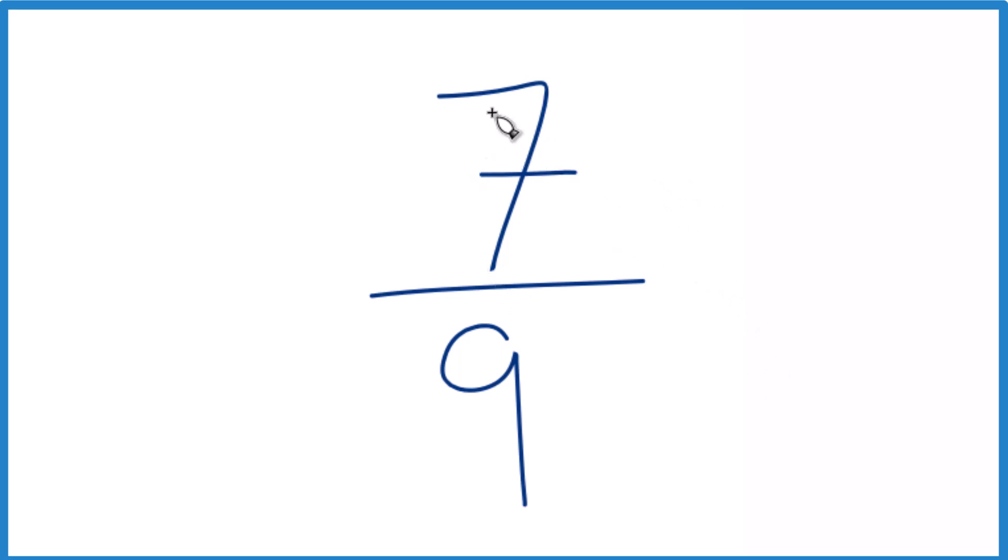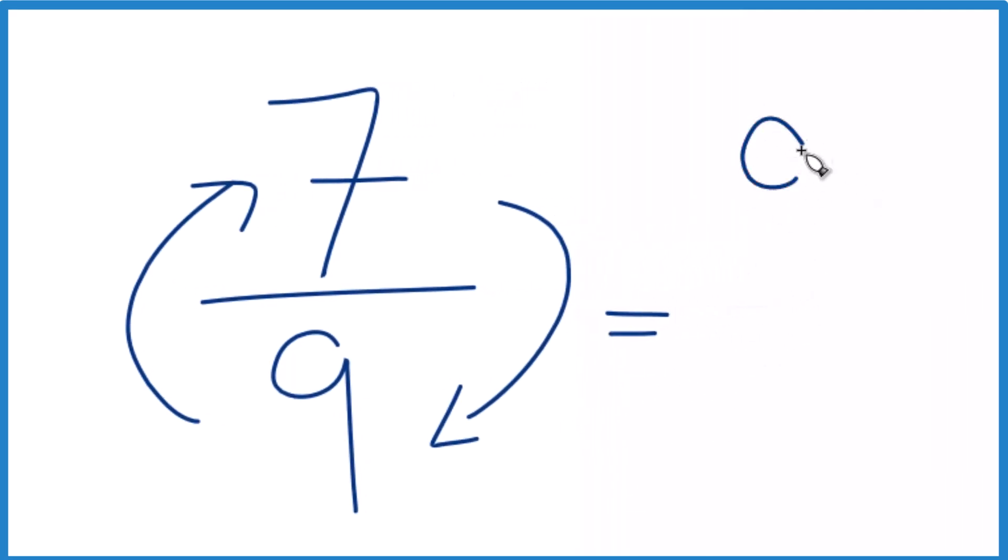So when we find the reciprocal for a number, we take the denominator, we move that up top and the numerator down to the bottom. So we end up with nine goes on top, and then seven, that'll go on the bottom.